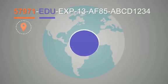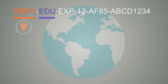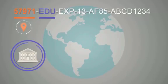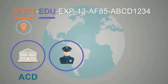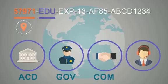Part 2 consists of 3 uppercase letters representing the sector of the issuing authority: academic (ACD), governmental (GOV), commercial (COM), and services (SRV).